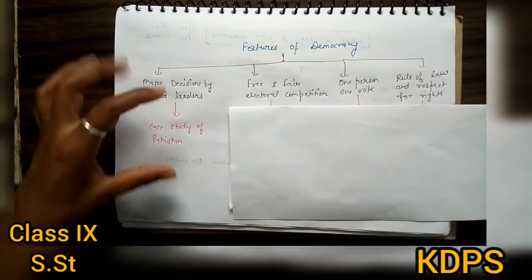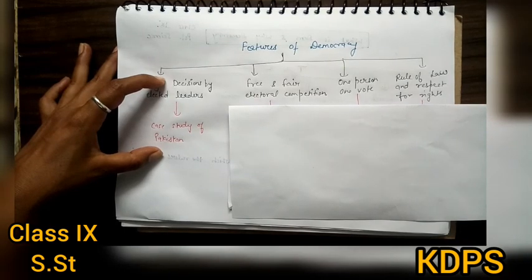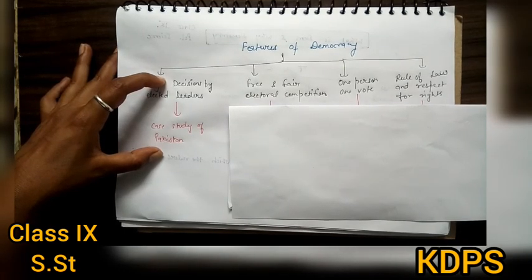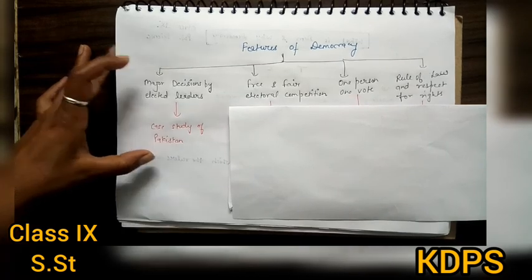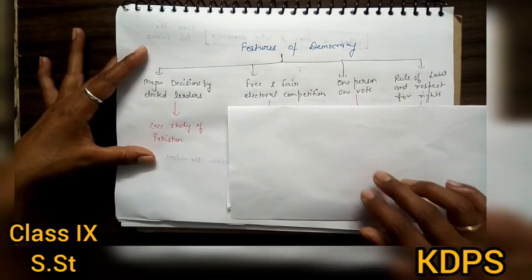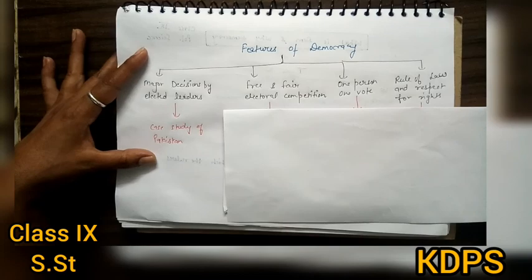So such countries which hold elections does not mean that they are truly democratic. After reading this, what do we say? In a democracy, the final decision-making power must rest with those elected by people, not in those hands which are not elected by people. So we will finish this in the next class. We will continue with the other three case studies. Thank you.